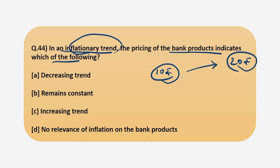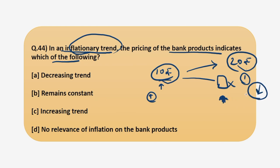In an inflationary trend you will choose to buy and consume today. Since you are not investing in the banks, banks will increase their interest rates to attract you to keep your money with them. When banks increase their interest rates, fewer people want to borrow money because it costs more. This reduces borrowings, which reduces the money supply in the economy and therefore reduces inflation.